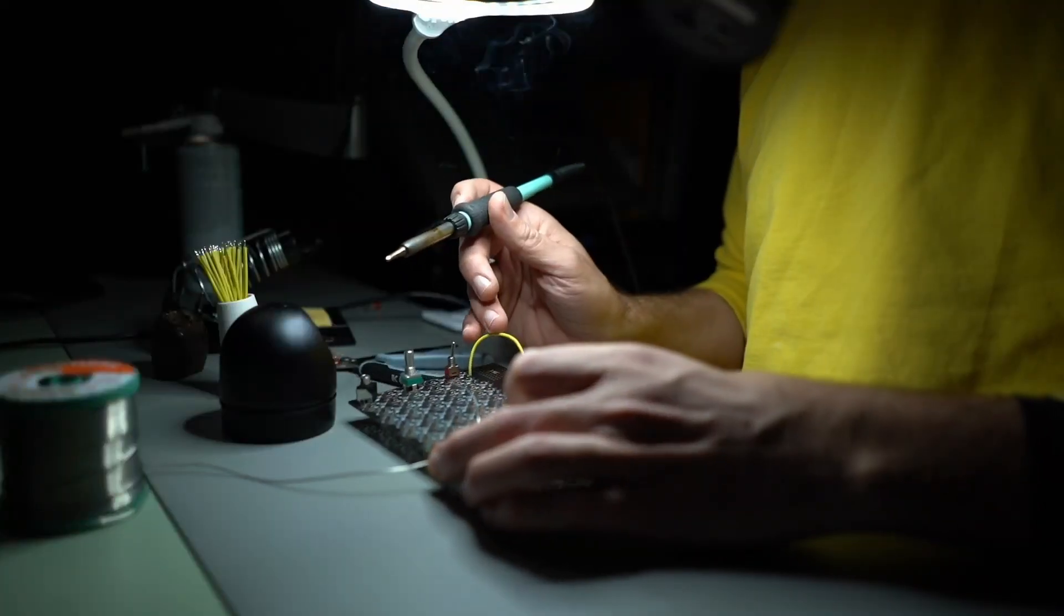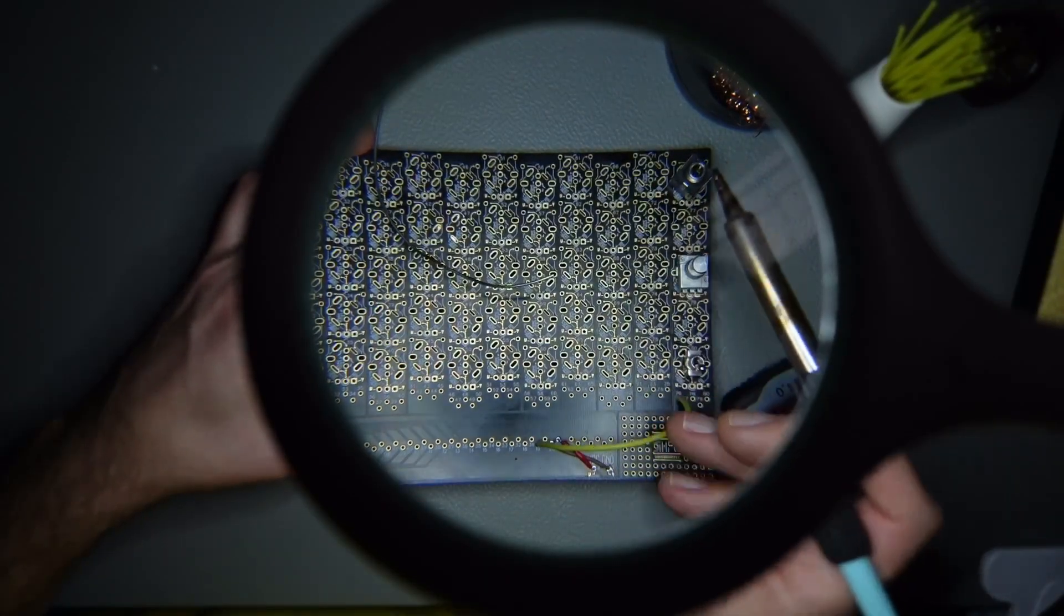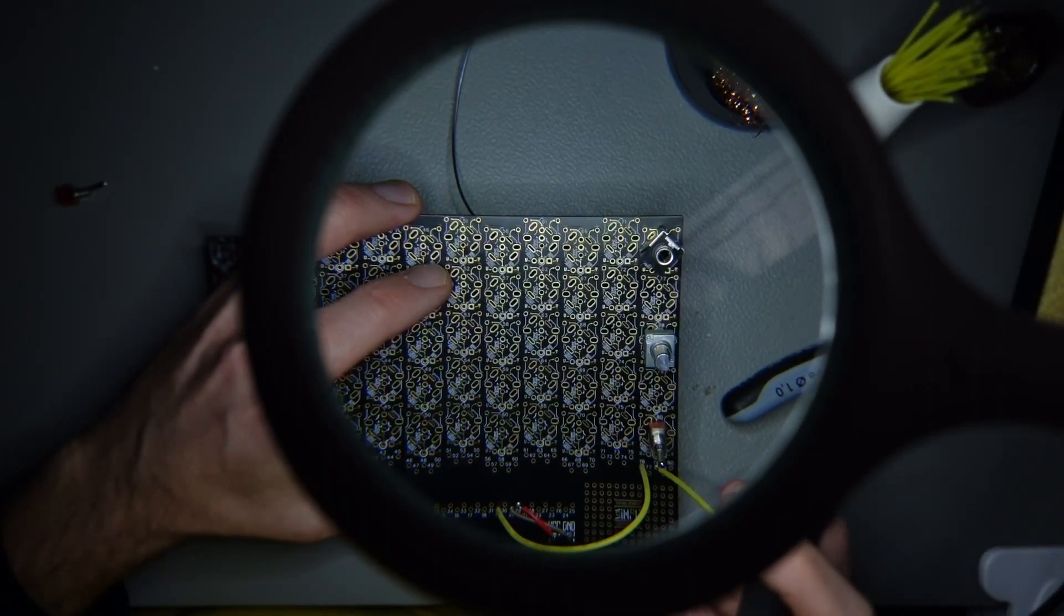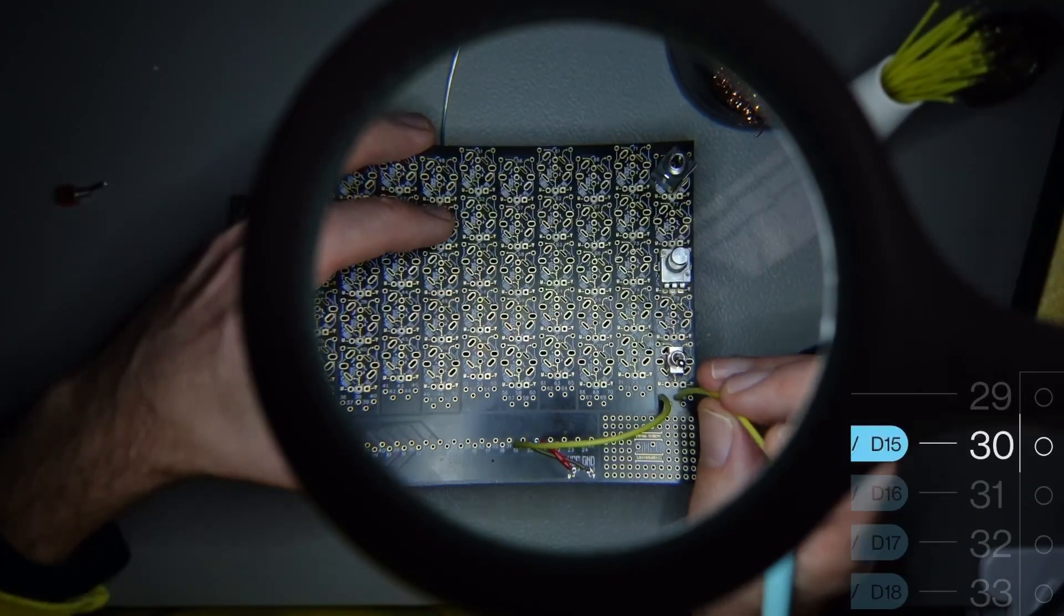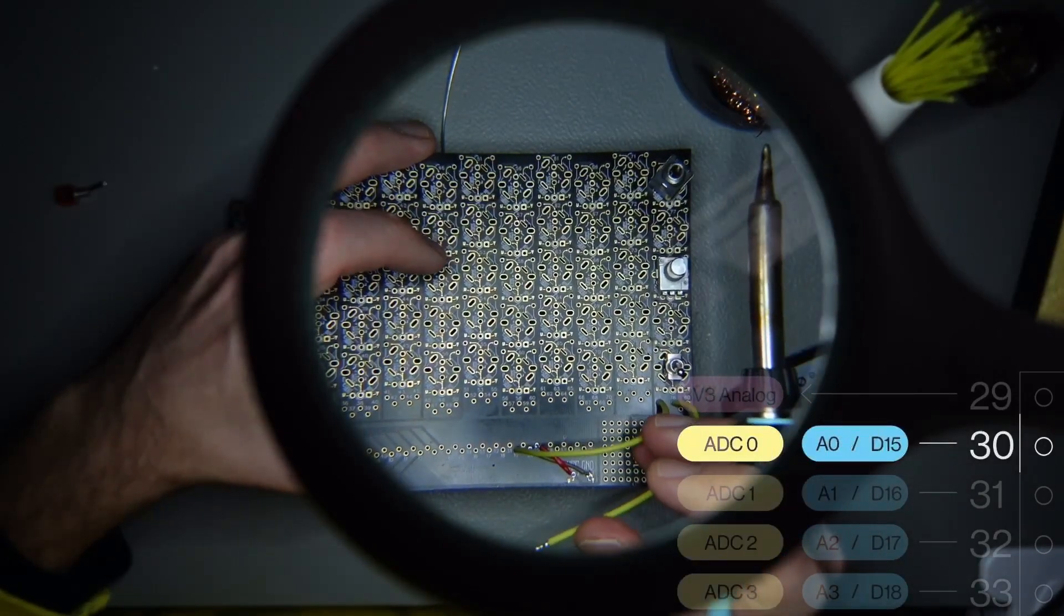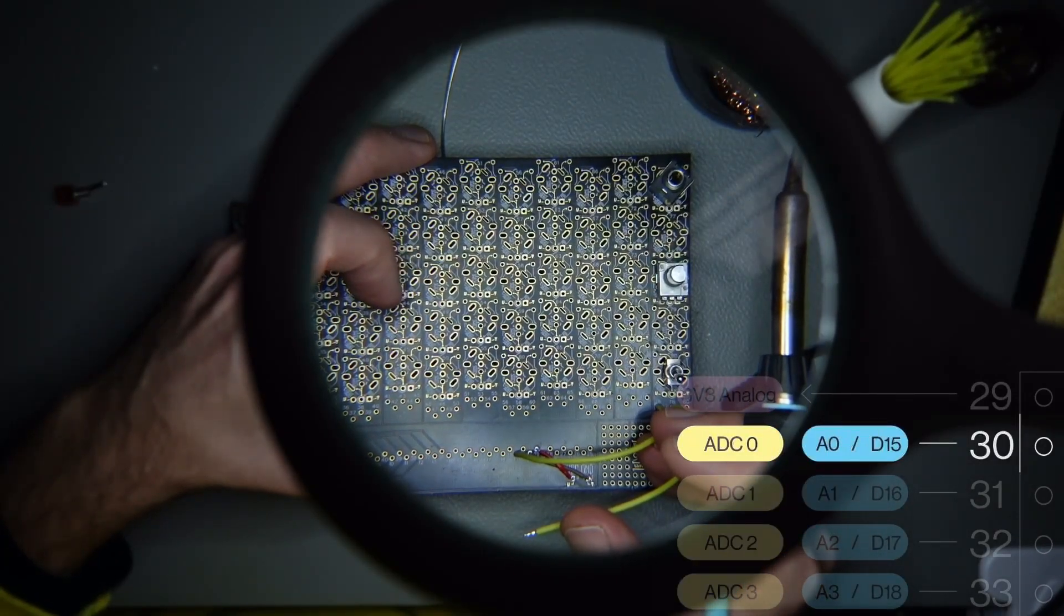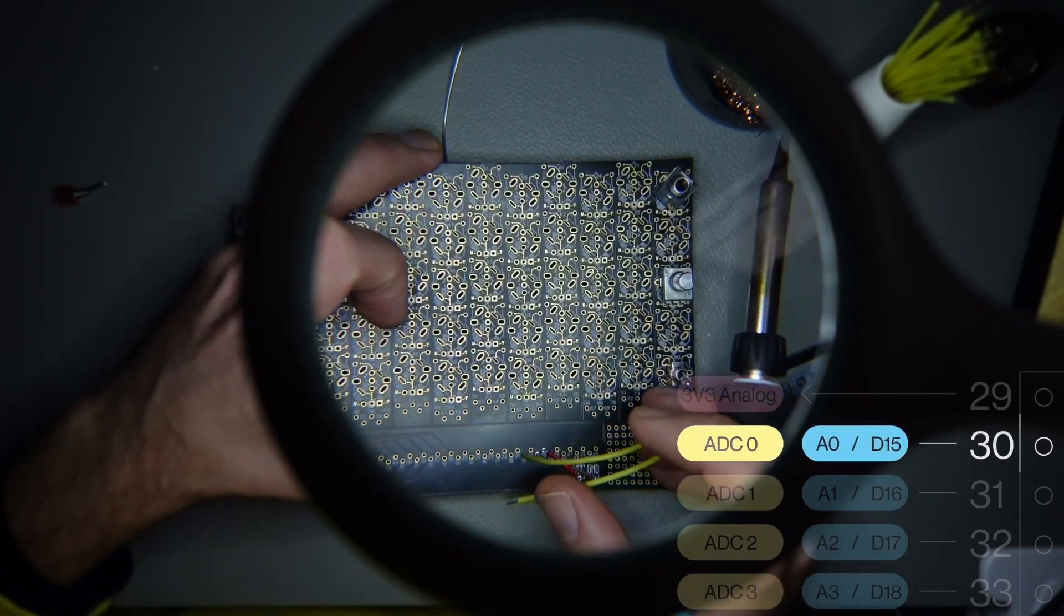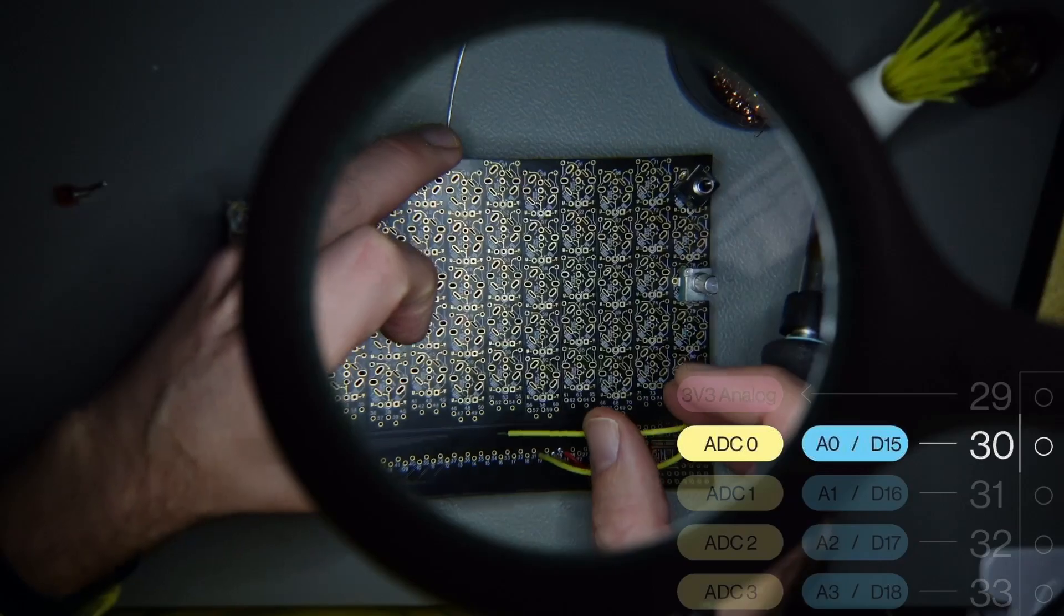I have a connection between 76 and 19. This is my output. Now let's connect number 78. Number 78 should go into an analog pin, so I am looking at 30 to 43, so the closest one is 30.